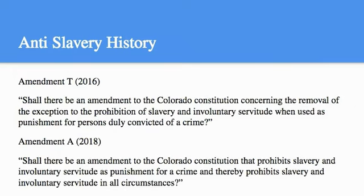In 2016, Amendment T was added to the Colorado ballot, looking to abolish slavery and involuntary servitude for those who are duly convicted of crimes. Amendment T failed to pass in 2016 by a small margin.